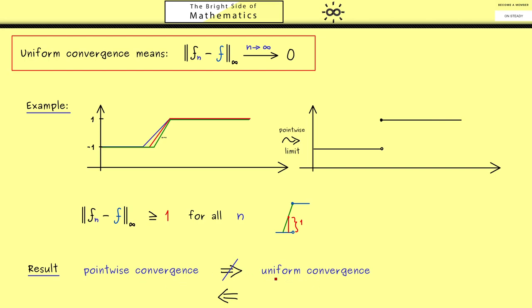And for us, the uniform convergence will be very important later, because it conserves nice properties of functions. For example, it conserves continuity we will define later. That's something that just the pointwise convergence can't do. However, one property you already know is the boundedness of functions, and the uniform convergence also conserves this property. This means if you have a sequence of bounded functions and they converge uniformly, then the limit function is also bounded.